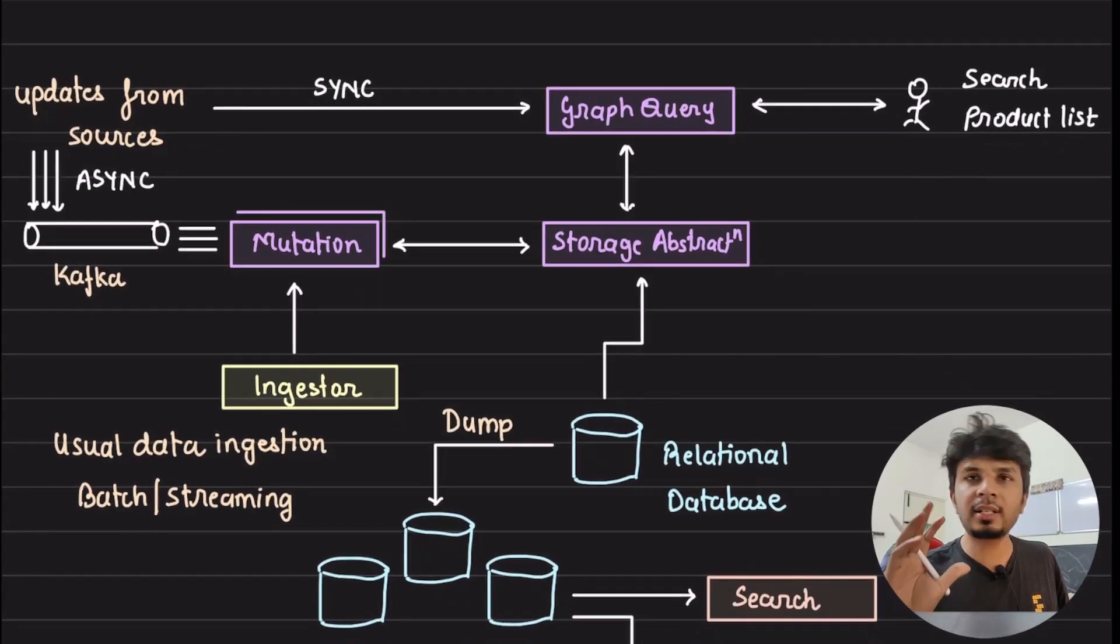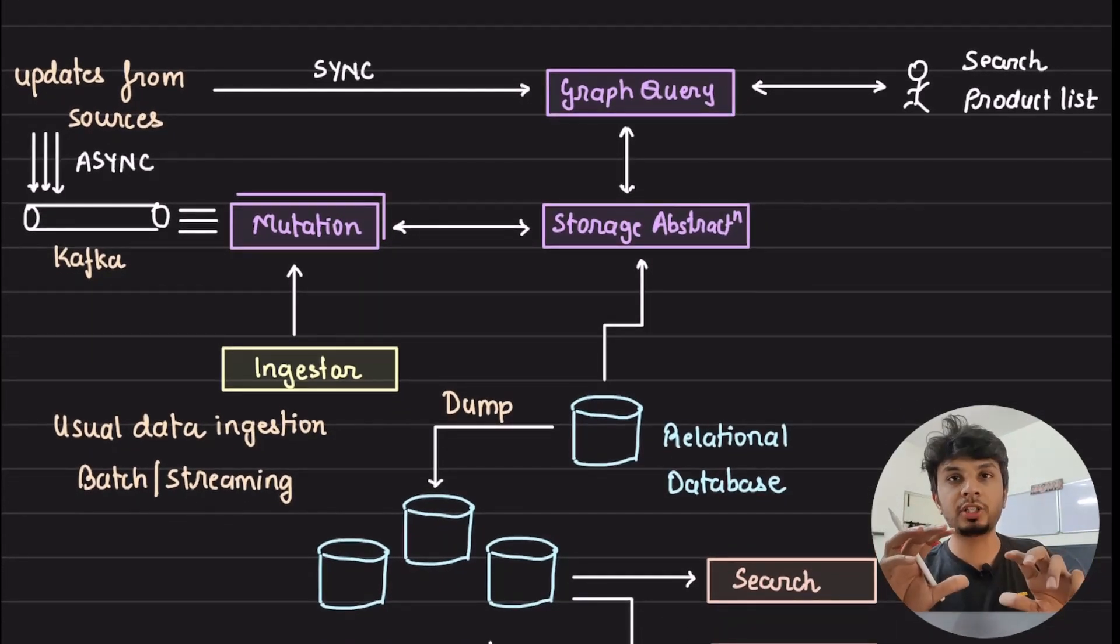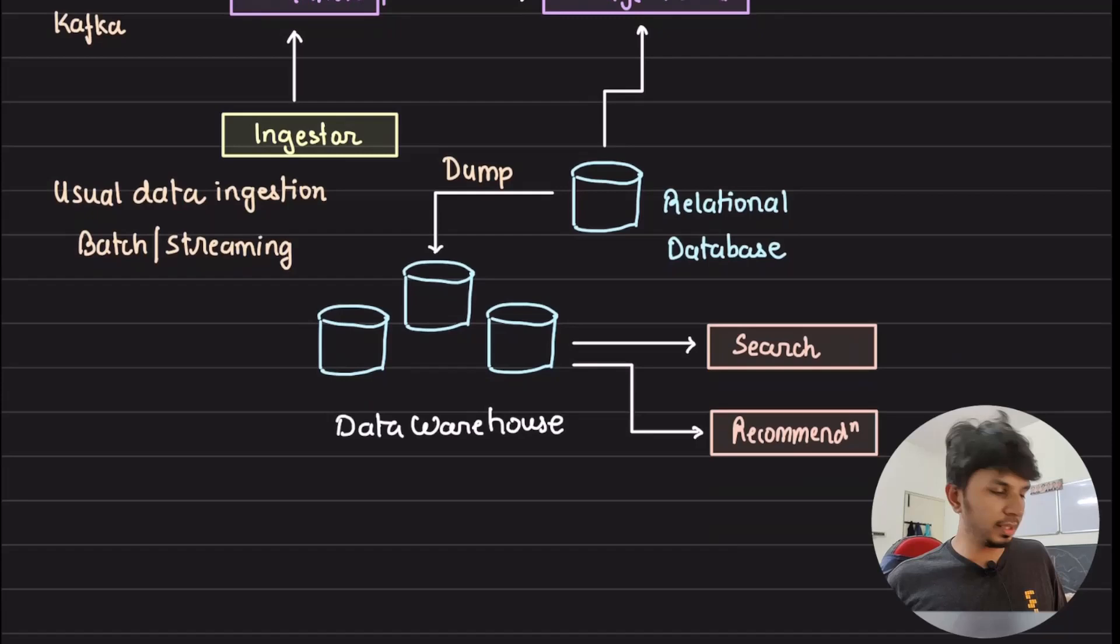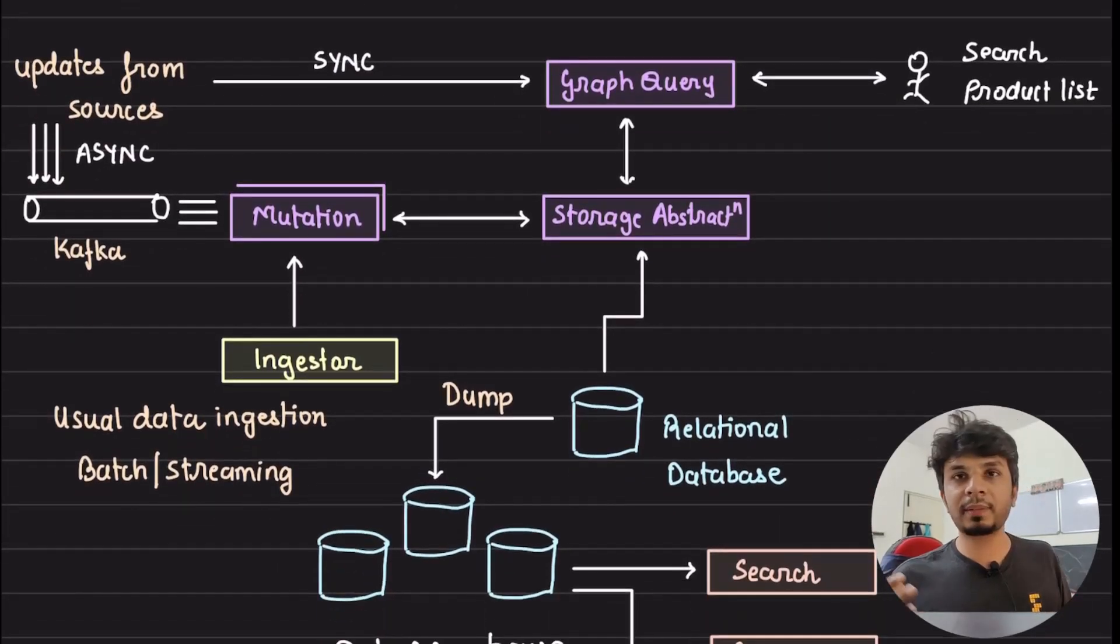And this is a very simple, extremely simple high-level architecture of Airbnb's knowledge graph. Extremely simple, but see how beautifully they made those design decisions: where are they using it synchronous versus asynchronous? These are the trade-offs that are extremely important when you are designing scalable systems, right? And that is it from this one. I hope you learned something interesting. You saw the beauty of simple systems. Simple systems always scale. Keep that in mind.